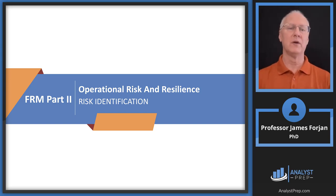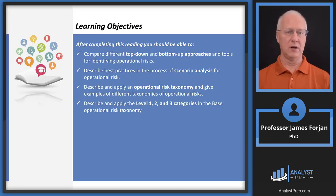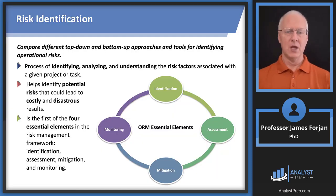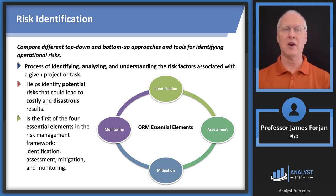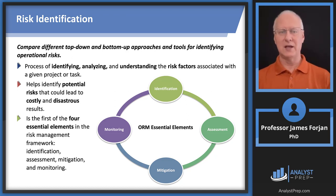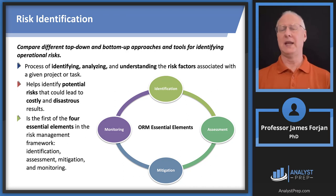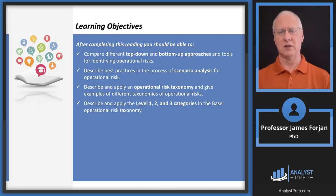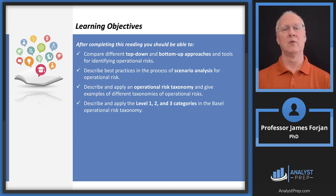So that's all part of this framework here in risk identification. Notice that we have these four kinds of areas in risk management: we need to identify the risk, we need to assess it — and assessing means measuring and quantifying — and then mitigating and monitoring, which kind of means managing. So look at these learning objectives here.